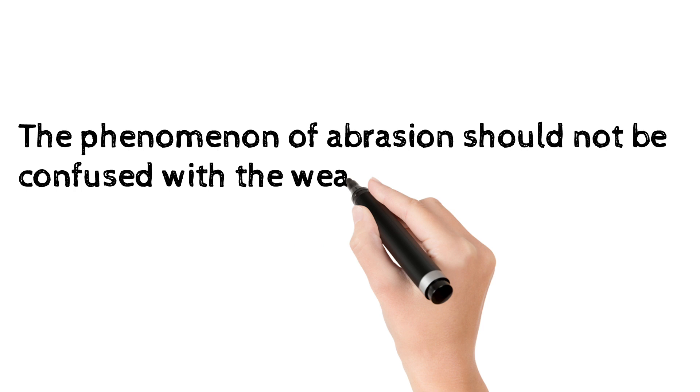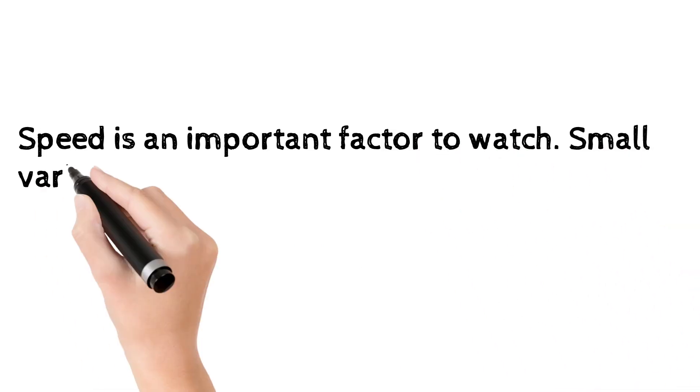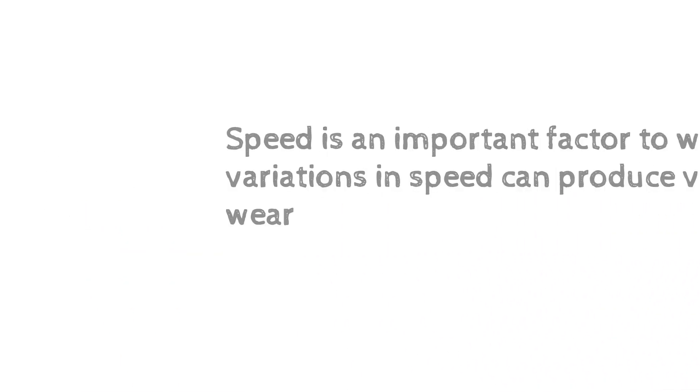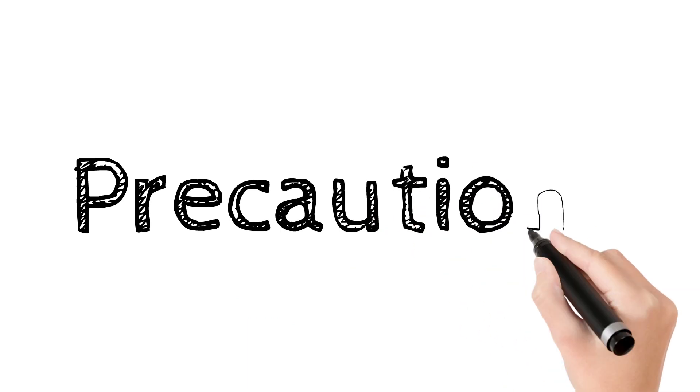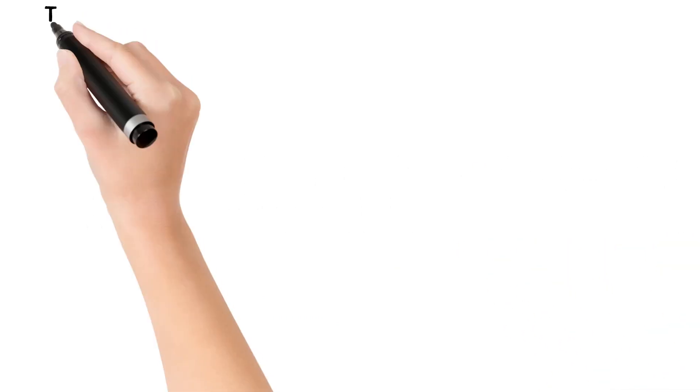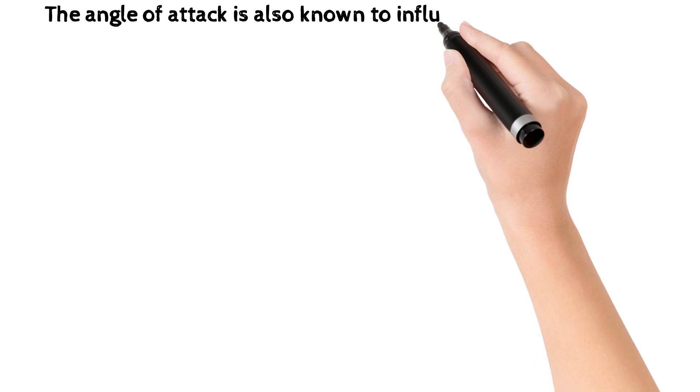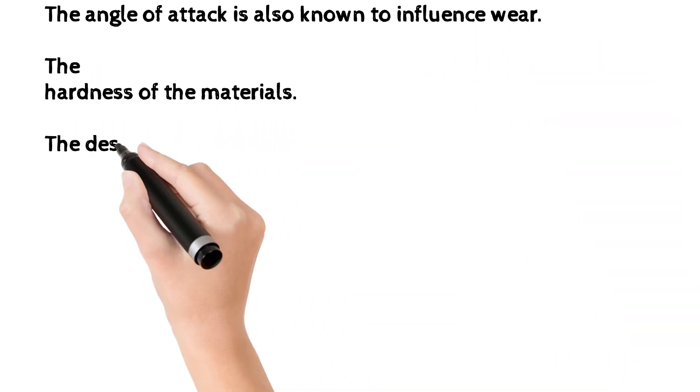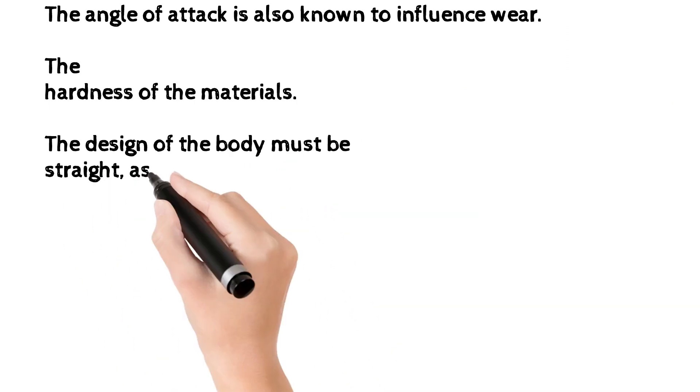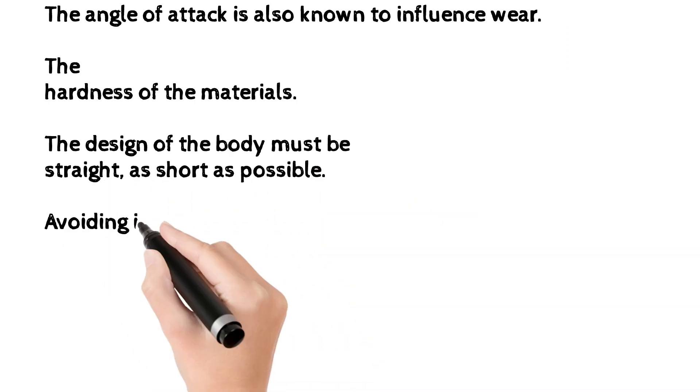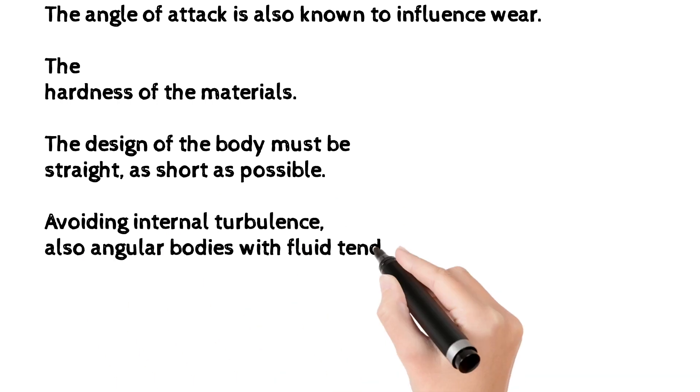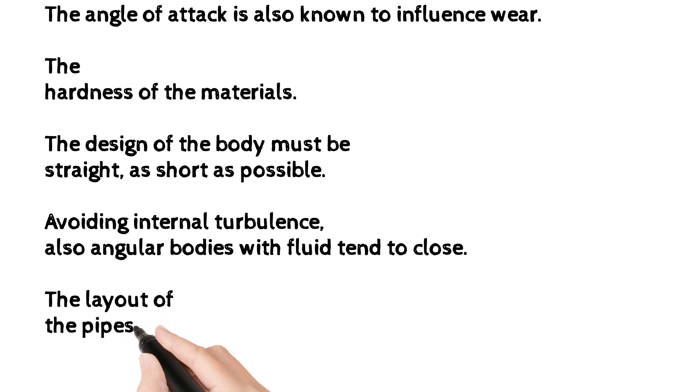Speed is an important factor to watch. Small variations in speed can produce very different wear. Precautions: The angle of attack is also known to influence wear. The hardness of the materials. The design of the body must be straight, as short as possible. Avoiding internal turbulence, also angular bodies with fluid tend to close. The layout of the pipes without elbows or reductions, the mounting position, etc.